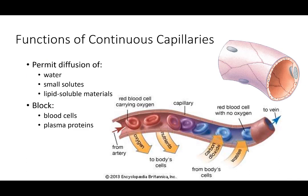Continuous capillaries allow some water out, some small solutes like glucose, small nutrients, electrolytes, and things cells may need. Lipid-soluble materials diffuse out quite easily. Large things like blood cells or plasma proteins are too big to escape through the thin wall. The capillaries also pick up carbon dioxide and waste to carry it away from the tissue.